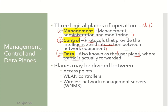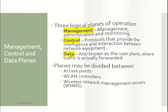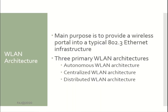These planes may be divided between access points, wireless LAN controllers, and wireless network management servers. The main purpose of Wireless LAN Architecture is to provide a wireless portal into a typical 802.3 Ethernet infrastructure. The three primary wireless LAN architectures are: Autonomous, Centralized, and Distributed wireless LAN architecture.